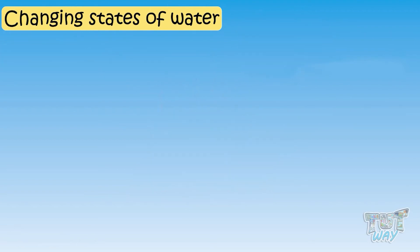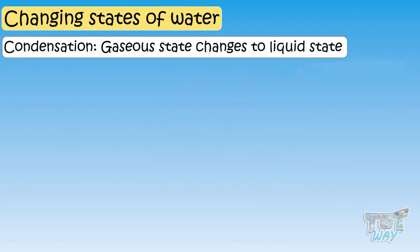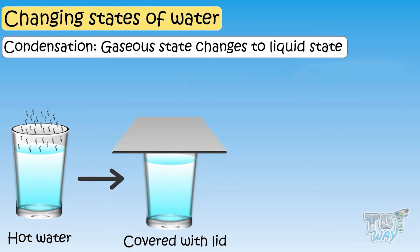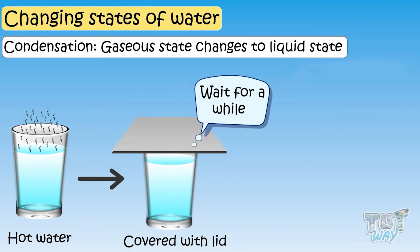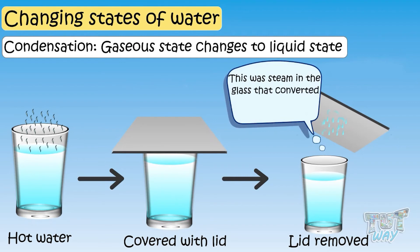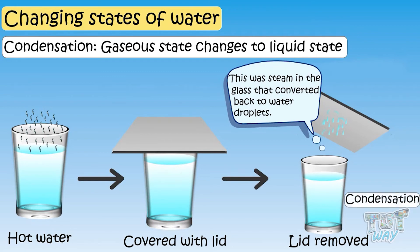Now let's see how the gaseous state of water changes back to a liquid state. Take a glass of hot water and cover it with a lid. Wait for a while, then remove the lid and observe the side of the lid facing the hot water. You will find tiny droplets of water on it. This is the steam in the glass that converted back to water droplets. This process, where the gaseous form of water changes to liquid form, is called condensation.